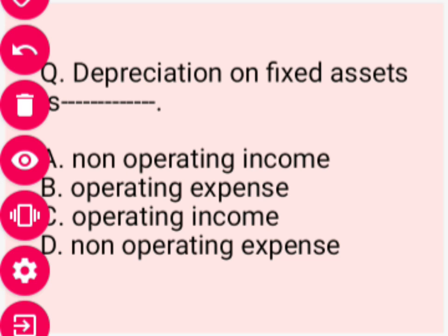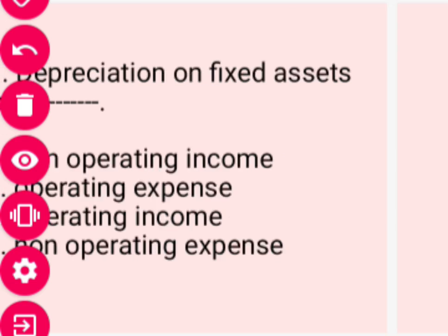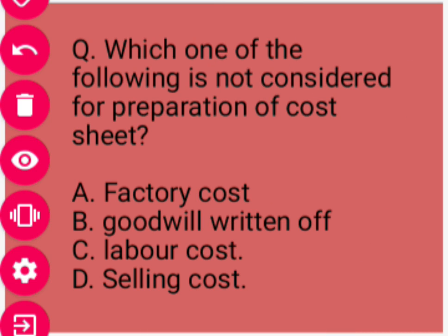Next: Depreciation on fixed asset is — options given: first, non-operating income; second, operating expenses; third, operating income; fourth, non-operating expenses. Jo depreciation fixed asset par lagaya jata hai, wo part hai non-operating expenses ka. Correct option hoga option D.